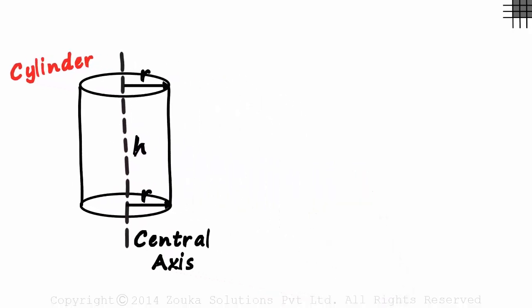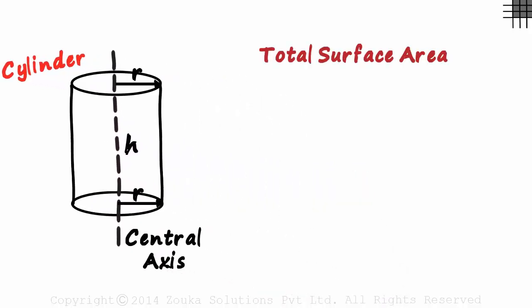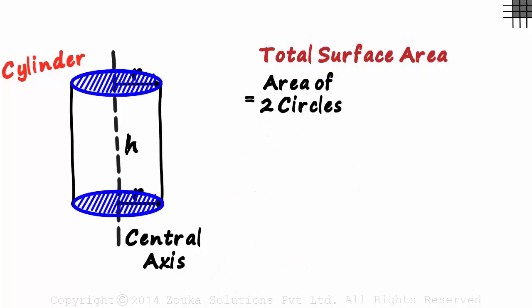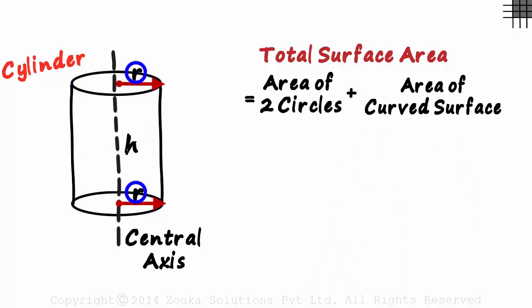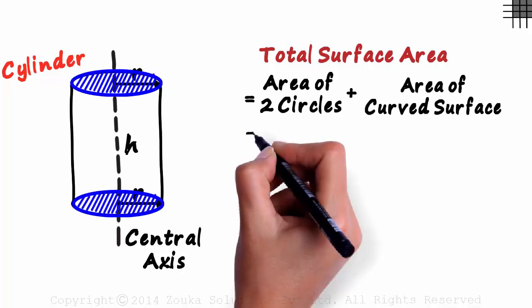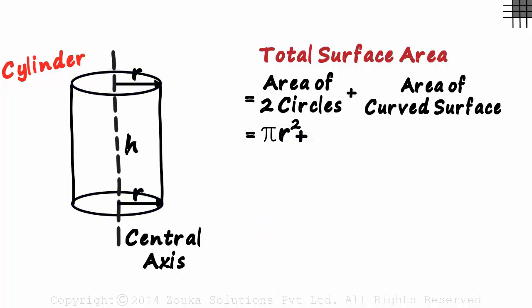So how do we find the total surface area of the cylinder? It will be the sum of areas of the two circles and the area of the curved surface. As the radius is r, the area of each circle will be πr². So the sum of the areas of both circles will be πr² + πr².